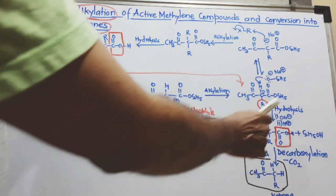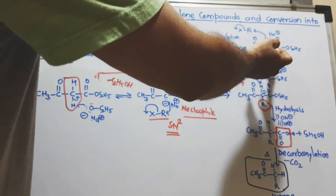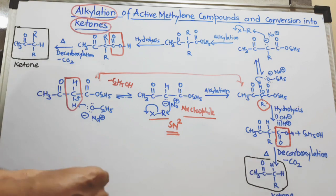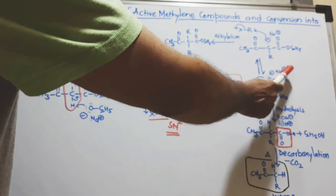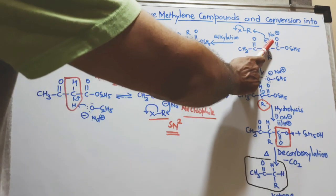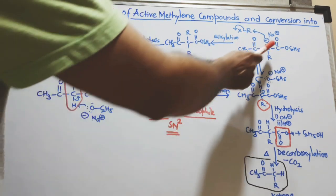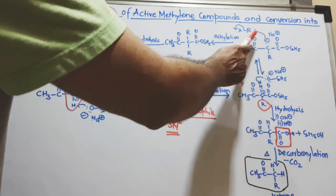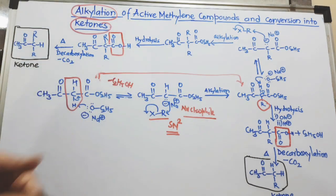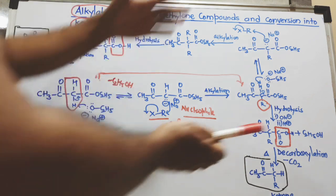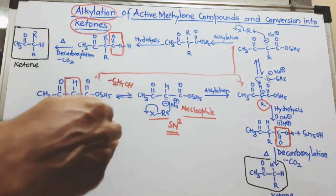There are two routes shown here: you can remove one hydrogen and join a desired alkyl group at that carbon, or you can repeat the step — using the base again, removing this proton, and forming another carbanion as a nucleophile. Then again a bond is formed between R and C and X is removed. This way you can attach two alkyl groups on the alpha carbon — this is double alkylation.